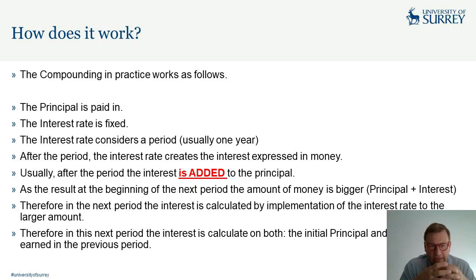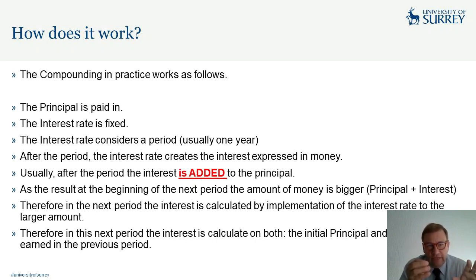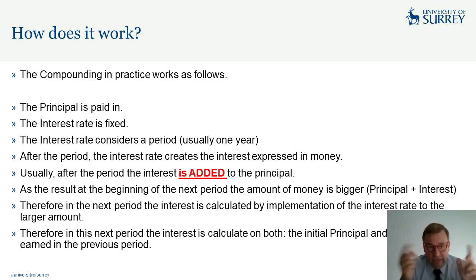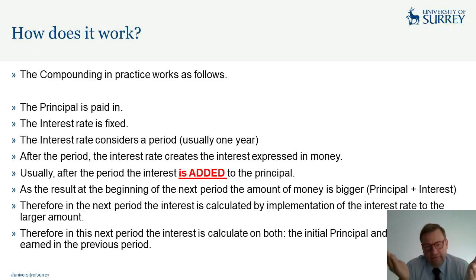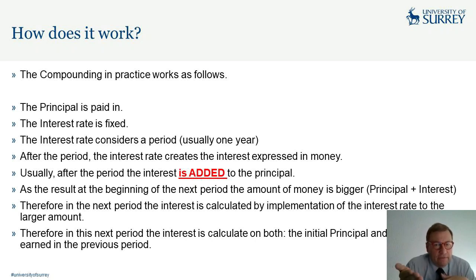The interest rate is a percentage; the interest is money. So at 12 percent on £100, the interest is £12. After the period, this £12 is added to the principal, so you start the next period with £112. The amount of money is now bigger: principle plus interest.